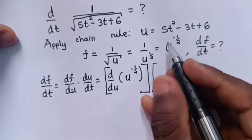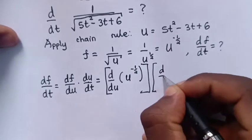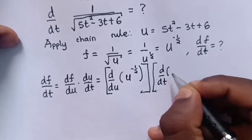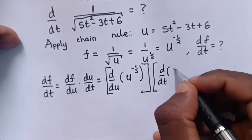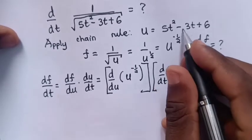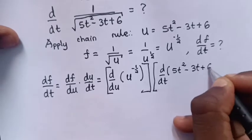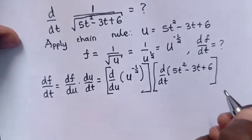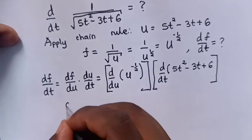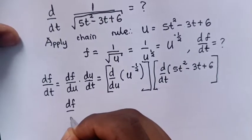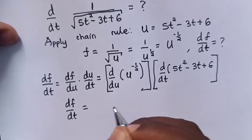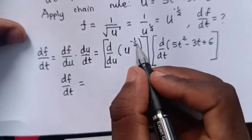So, derivative of 5t² - 3t + 6 with respect to t. Now, we are going to differentiate.